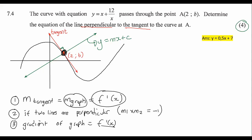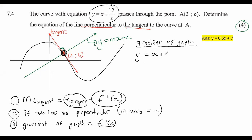So how are we going to do this? First, we'll go find the gradient of the graph using calculus and the first derivative. Before we can take the first derivative, we need to rearrange the equation and make it a little more user-friendly. I'm going to bring that X to the top, and now we can take the first derivative.